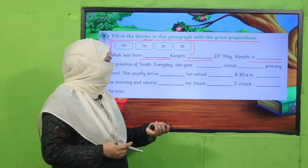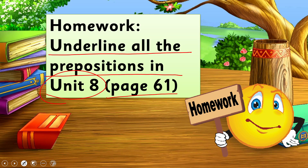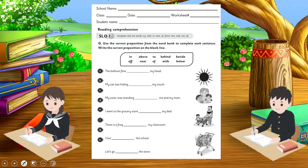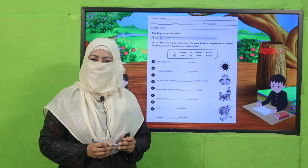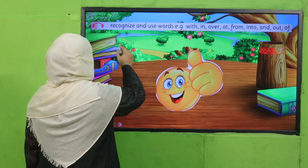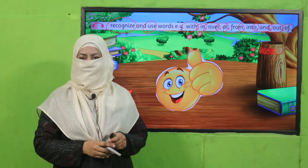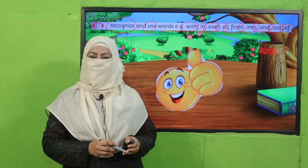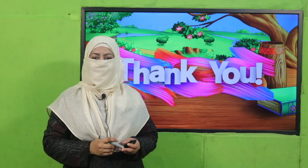Good job! It's time for your homework — you will underline all the prepositions in this unit on page number 61. Here is a worksheet; fellow teachers, the worksheet, lesson plan, and presentation links are given — please click, download, and provide a printed worksheet to students for practice. So what we learned today: we learned to recognize and use words such as 'with,' 'in,' 'over,' 'at,' 'from,' 'into,' and 'out of.' That's it for today. Tomorrow I'll come again with a very interesting lesson. Keep learning, keep practicing. Take very good care of yourself. Thank you, and Allah Hafiz.